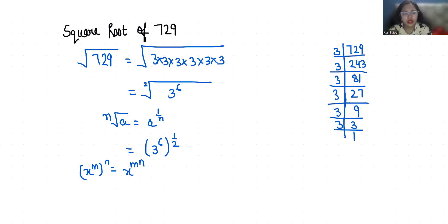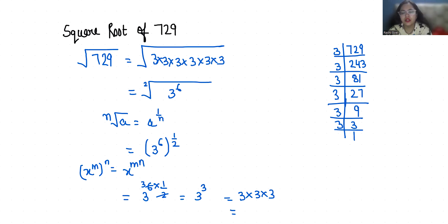So 3 power 6 times 1 by 2 gives us 3 power 3, which equals 3 times 3 times 3. 3 times 3 is 9, and 9 times 3 is 27. So the square root of 729 equals 27.